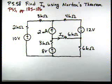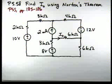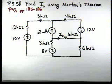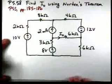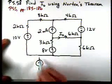Here's a problem-solving video for problem 5.58. This time it says find I0 using Norton's theorem. We're going to be using the problem-solving strategy on pages 185 and 186, except now we'll be calculating a Norton equivalent circuit.